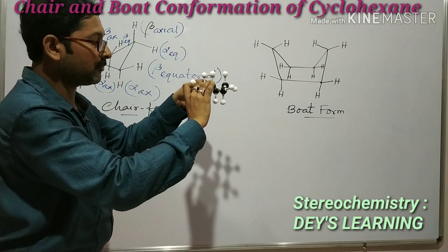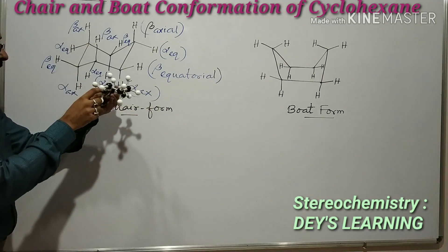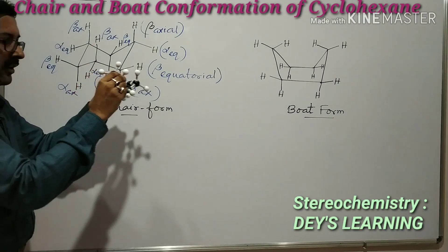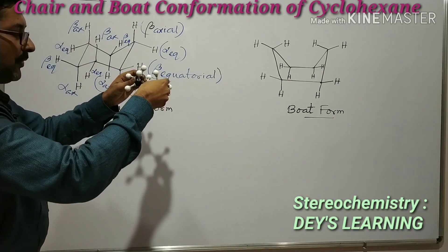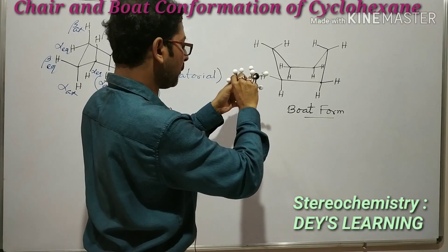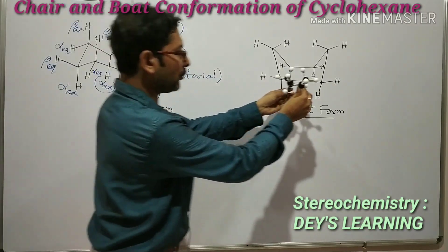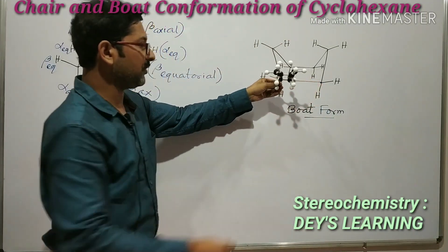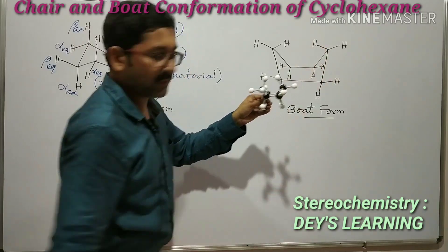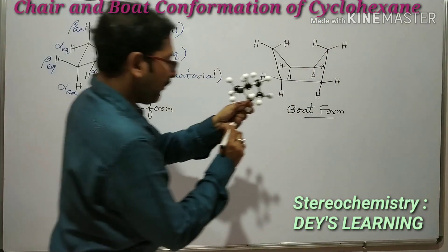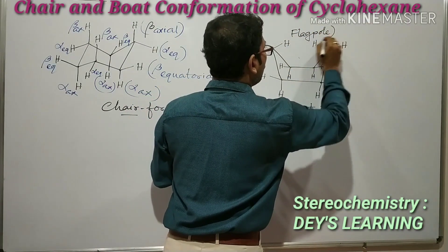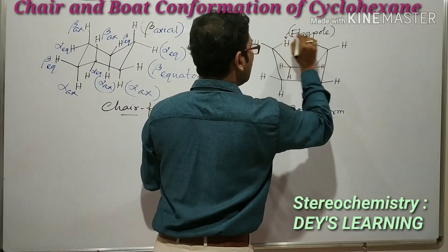If we just rotate these two bonds — the carbon which is present below the plane — if we move this carbon up, just up, nothing else, look at here: this is your boat conformation. If we look from this angle, it looks like this.